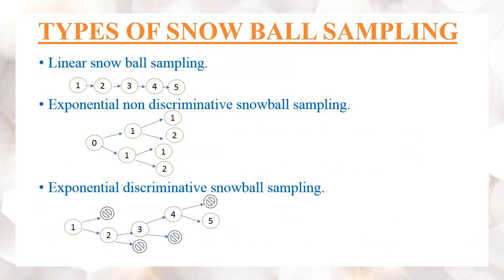There are types of snowball sampling. First is linear snowball sampling: the researcher chooses the first sample and seeks assistance from that sample to find the second sample, then from the second sample identifies the third, and so on. This process is continued until the required number of samples are available.